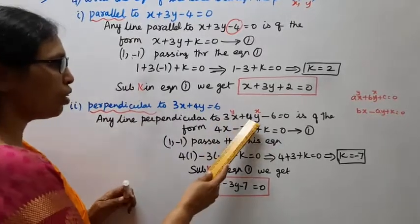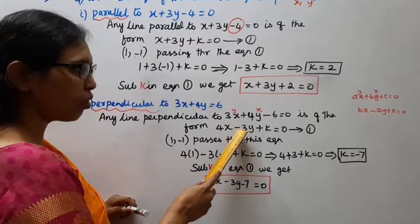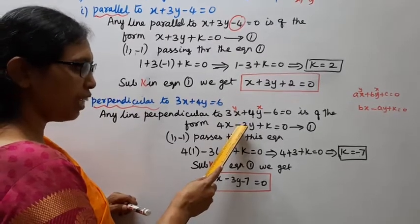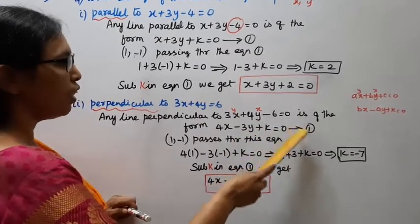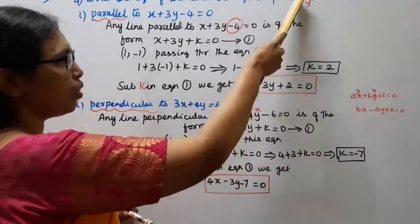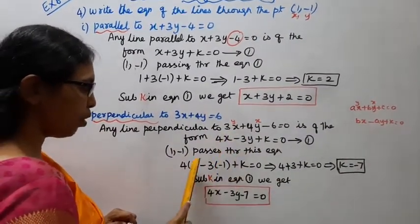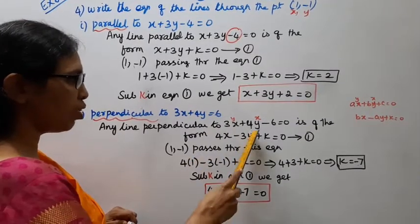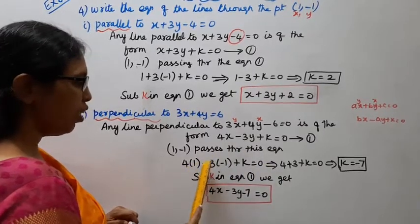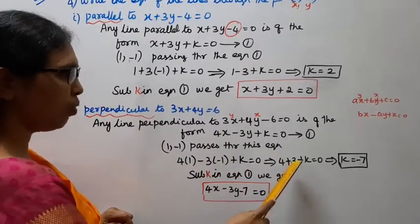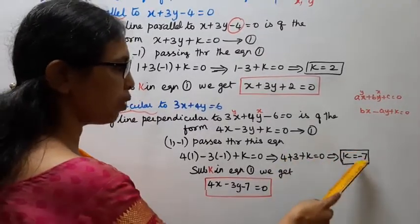So we get 4X - 3Y + K = 0. This is the first equation. The point (1, -1) passes through this equation: 4(1) - 3(-1) + K = 0. That's 4 + 3 + K = 0, so K = -7.